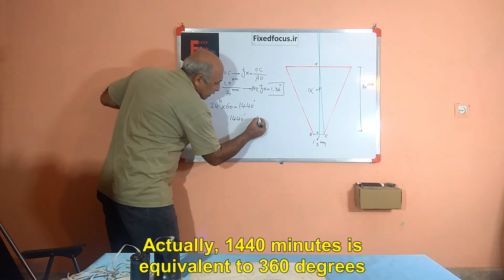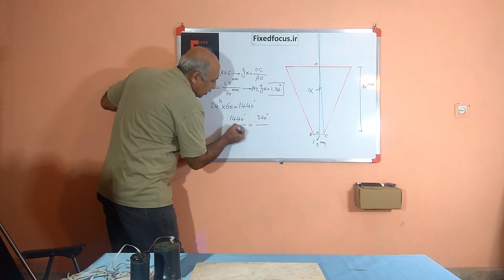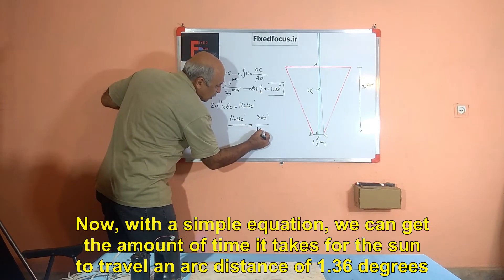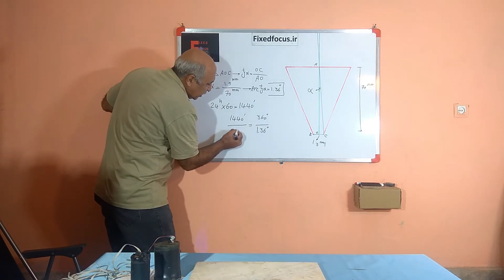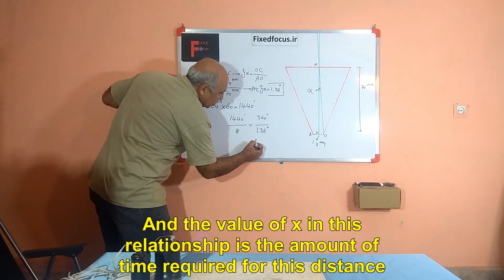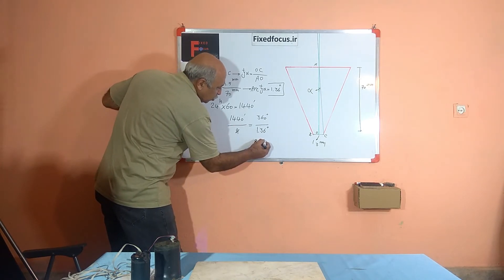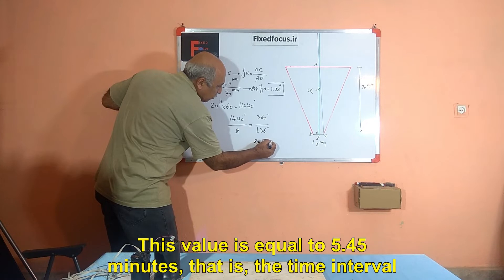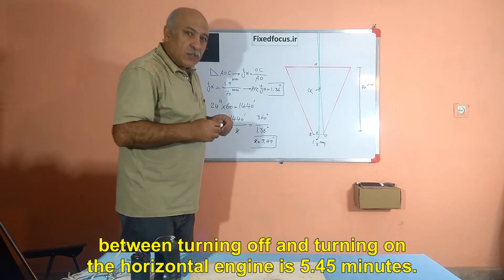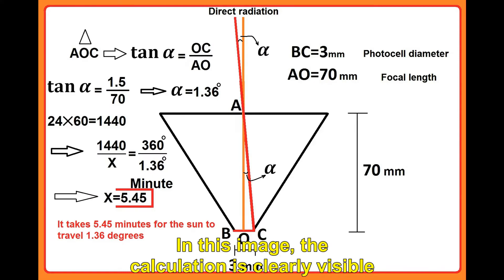Actually, 1,440 minutes is equivalent to 360 degrees. Now, with a simple equation, we can get the amount of time it takes for the sun to travel an arc distance of 1.36 degrees. And the value of x in this relationship is the amount of time required for this distance. This value is equal to 5.45 minutes, that is, the time interval between turning off and turning on the horizontal engine is 5.45 minutes. In this image, the calculation is clearly visible.